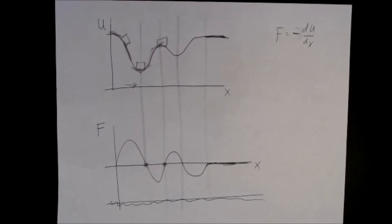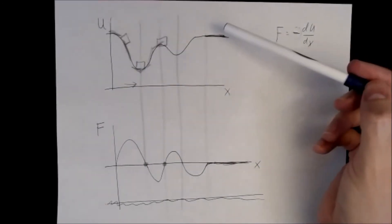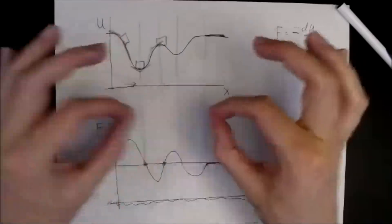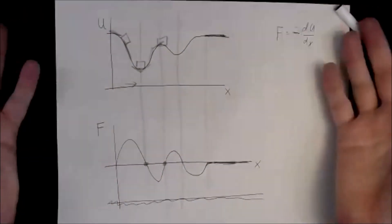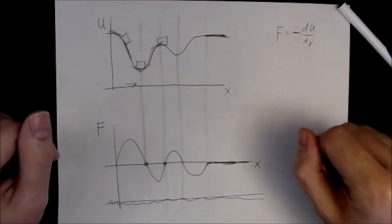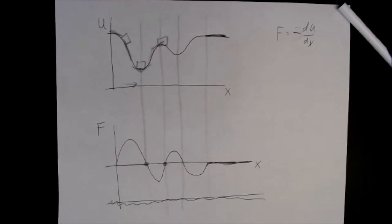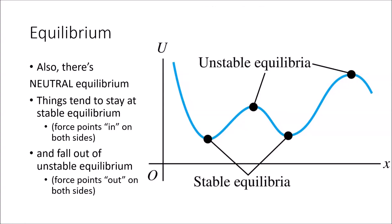This relationship between potential and force is very important in chemistry, because there are chemical potential energies that change depending on the position of two atoms. As atoms get closer or farther apart, the force between them changes, and the potential energy changes too. Understanding potential energies and forces between atoms tells us which molecules release energy when combined, which require energy to combine, and vice versa.